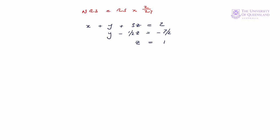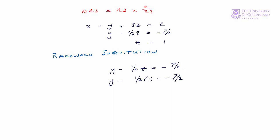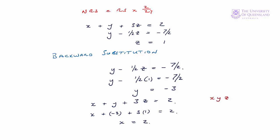What we do now is use backward substitution to solve for y and x. From equation two we have y minus one half z equals minus seven on two. We know z, so y minus one half times one equals minus seven on two. Adding one half to both sides gives us y equals minus three. We substitute into equation one to solve for x: x plus minus three plus three times one equals two, which implies x equals two. Our solution then is x, y, z equals two, minus three, one.